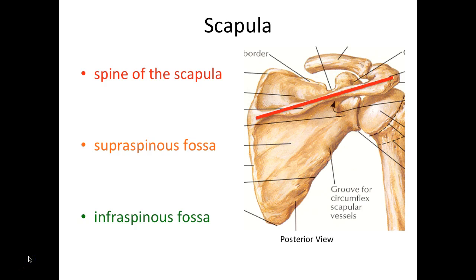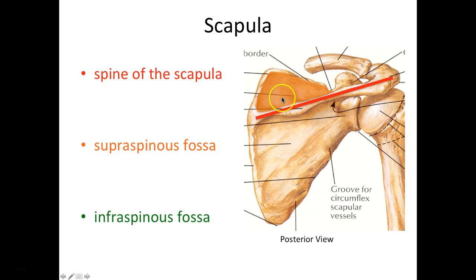So that spine of the scapula — if you feel above that ridge, you are going to feel your supraspinous fossa. Add fossa to your terminology list: fossa means a shallow depression. Later in anatomy two, we'll learn that the supraspinatus muscle sits within this fossa. And then below the spine of the scapula, you're going to have a shallow depression called the infraspinous fossa.